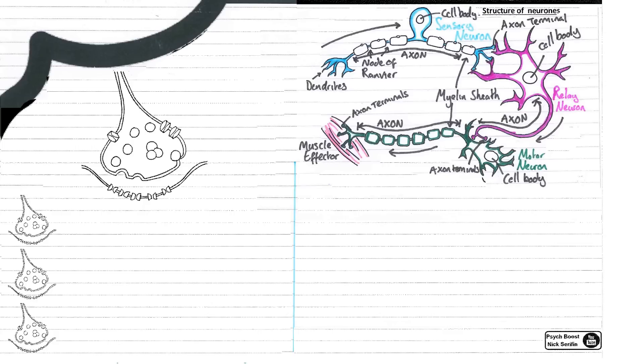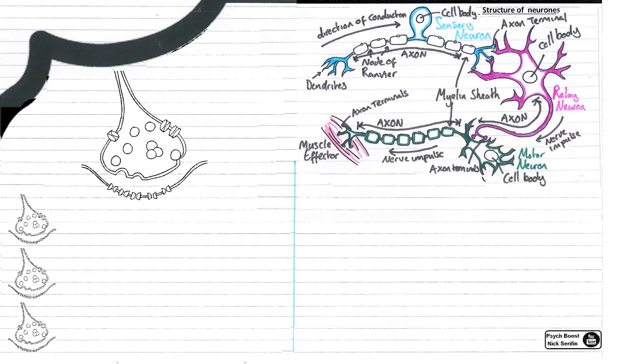We can see at the end of the motor neuron I've labeled the muscle, called the effector. So once the information gets there, that'll be moving in response to whatever happens. Around the relay neuron, I've just drawn in the direction of the impulse, so we can see that it goes from the dendrites along the sensory neuron into the relay neuron, then things happen, and then eventually we're going to get to the motor neuron, along the motor neuron onto the muscle.